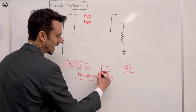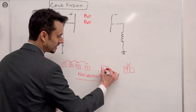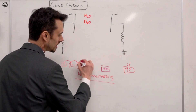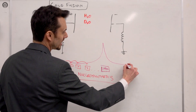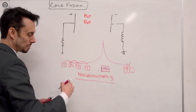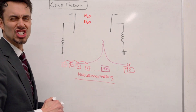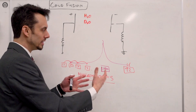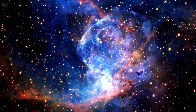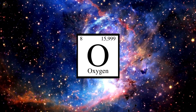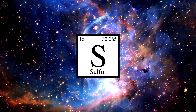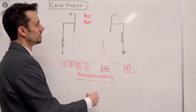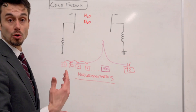During nucleosynthesis there's a sweet spot, and it's iron. It's the most stable place, which is why nebulas are basically made up of iron, oxygen, sulfur, and similar elements. These electrocoagulate together to make a planet, moon, or asteroid.